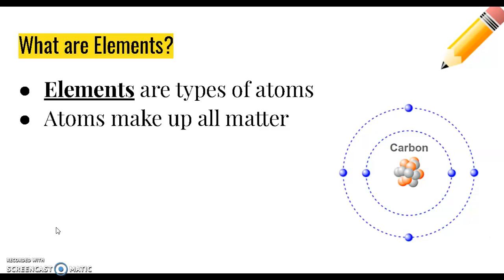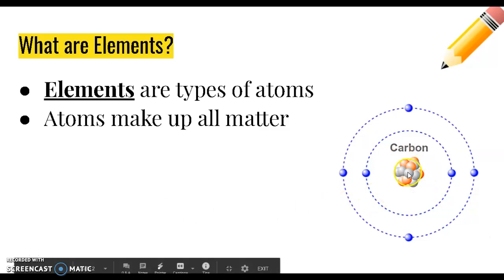First is what are elements. Elements are types of atoms. Atoms make up all matter. An atom is made of a nucleus in the center that contains protons and neutrons, and electrons that buzz all around the nucleus.